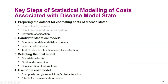The key steps to perform statistical modeling of costs associated with model states are: prepare the dataset including generating raw data, handling missing data and censored data, and specifying covariates. Then select candidate statistical models and covariates, perform specification tests, and compare promising models through covariate selection and final model selection. Finally, consider interactions between covariates, and use the final model to predict costs for given individual characteristics.